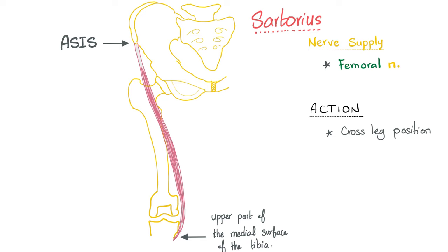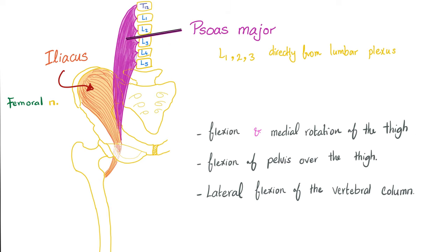Sartorius is a muscle of the anterior compartment, therefore supplied by the femoral nerve. Next, let's talk about the psoas major and the iliacus, together known as the iliopsoas muscle, because they join each other and have a common insertion: the lesser trochanter of the femur.